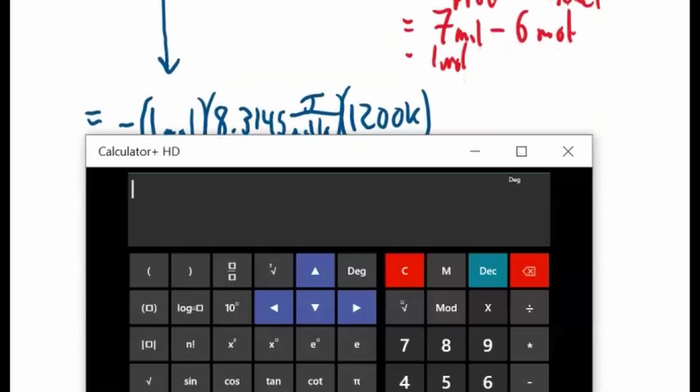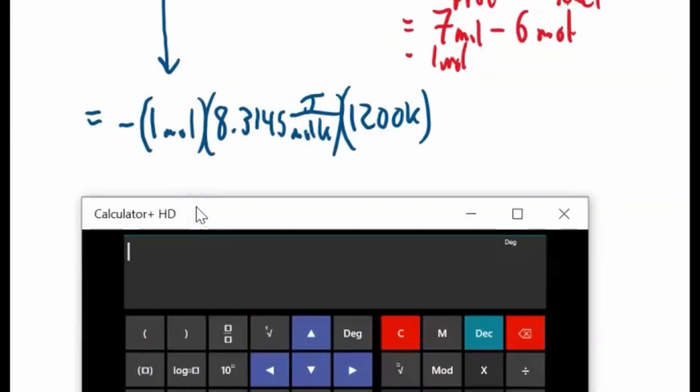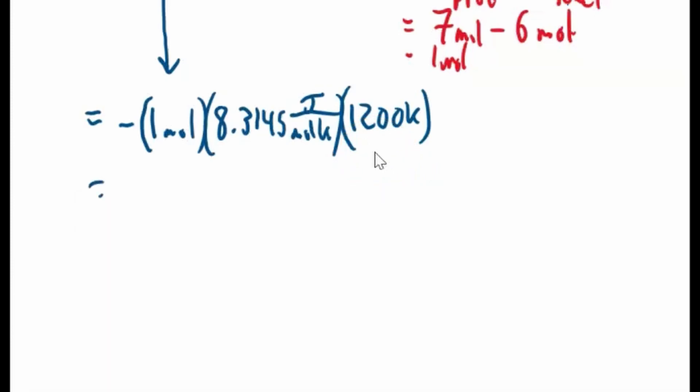Okay, so we'll plug this into our calculator. Negative one times 8.3145 times 1200. I love these calculators where you can see what you're typing. You can see if I made an error or not. So negative 99.77, it's a nice number. Equals negative 99.77.